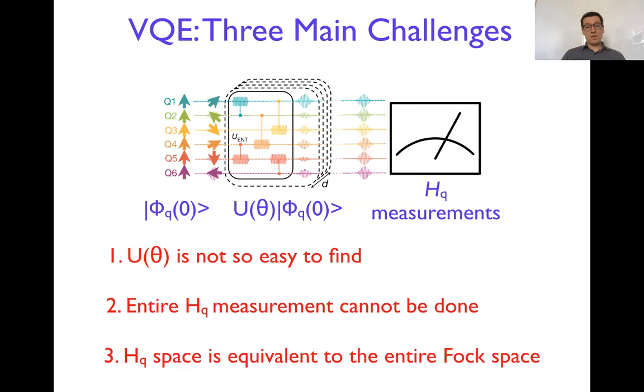So you, as we will discuss later, need to partition the Hamiltonian into pieces that you need to measure separately. The third problem is that the Hamiltonian space, or Hilbert space of qubit Hamiltonian essentially, is equivalent to entire Fock space of original problem. And that Fock space contains various electronic states, various number of electrons, various spins. So it's a large space and looking for a particular electronic state in that large space may be challenging.